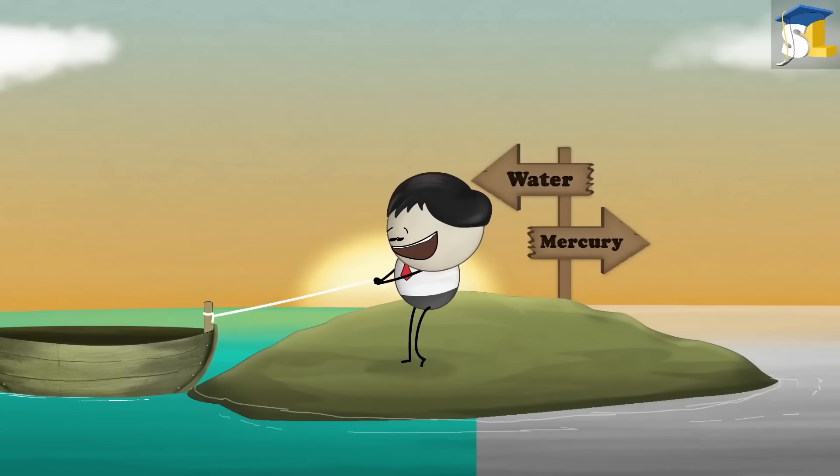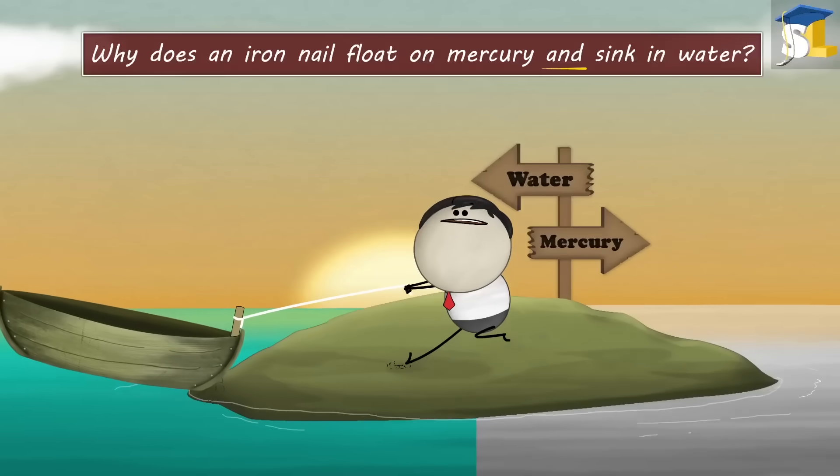Density. Why does an iron nail float on mercury and sink in water?